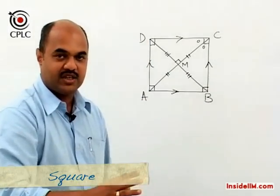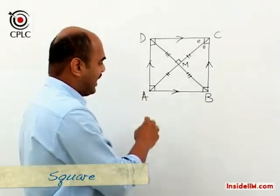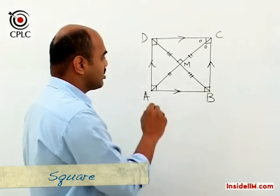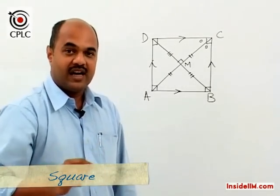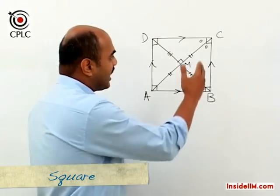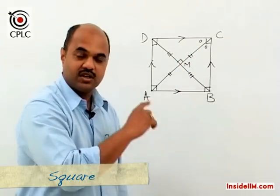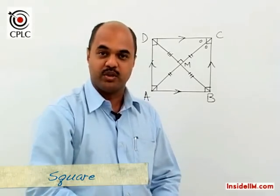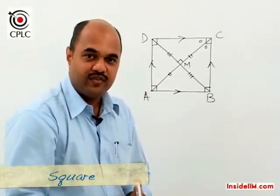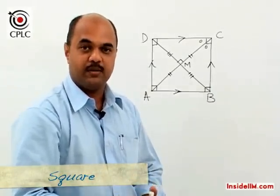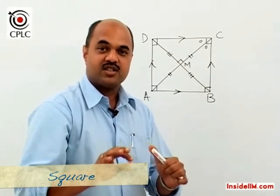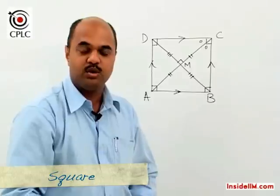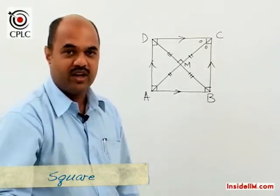All properties of a parallelogram, rhombus, and rectangle are applicable to a square. In terms of sides: all sides equal, opposite sides parallel. In terms of angles: all angles equal, each equal to 90 degrees. In terms of diagonals: diagonals are equal, diagonals are perpendicular bisectors of each other, diagonals are angle bisectors, and diagonals divide the square into four congruent triangles. If you are ever confused about a property, the square is the safest — whatever property you think of applying, it will hold for a square.